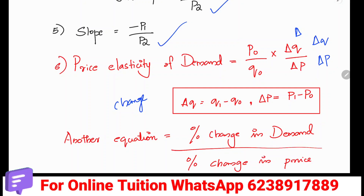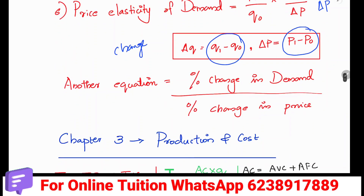Delta Q is the change in quantity: Q1 minus Q0. Delta P is the change in price: P1 minus P0. The equation for price elasticity of demand is percentage change in quantity demanded divided by percentage change in price.